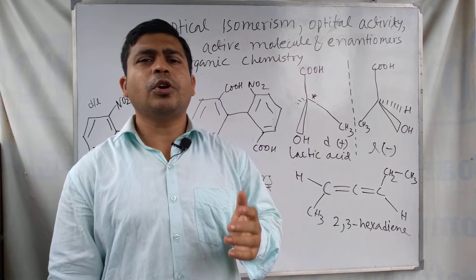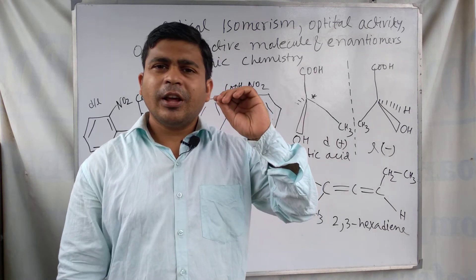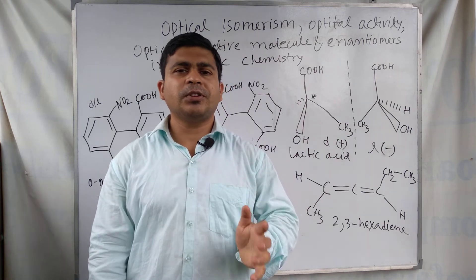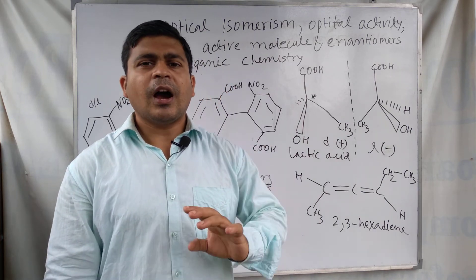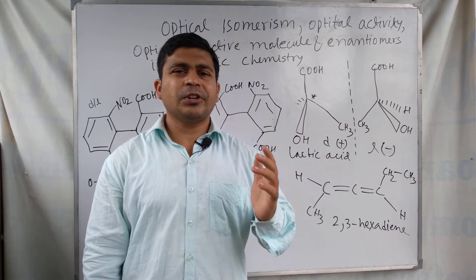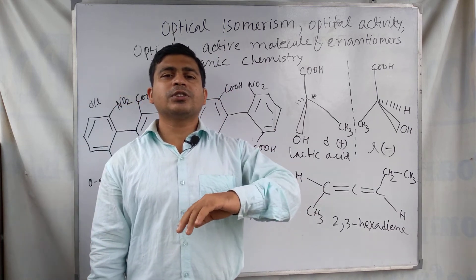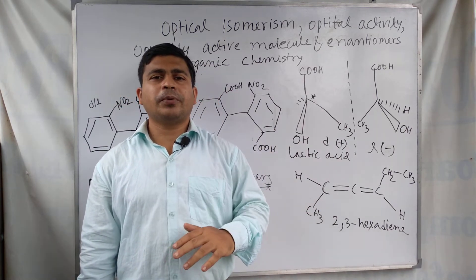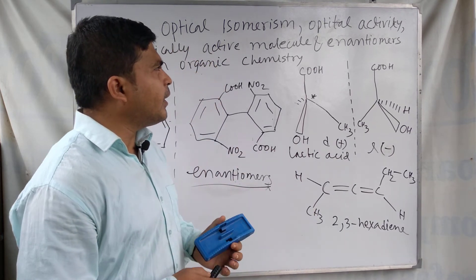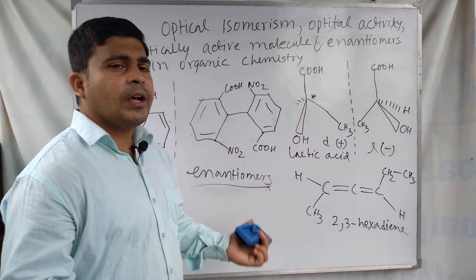For a molecule to be optically active, there must be a chiral carbon atom. However, chiral carbon alone is not sufficient — the molecule may still be optically inactive if the optical rotation of one chiral carbon is cancelled by that of another, or if the molecule has a plane of symmetry. This concludes the discussion about enantiomers, optical activity of organic molecules, and optical isomerism.